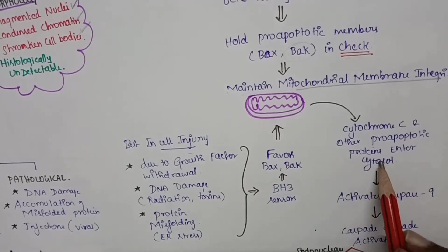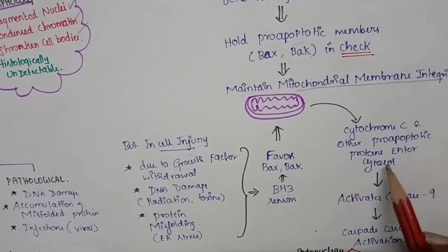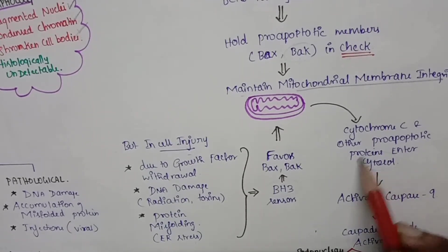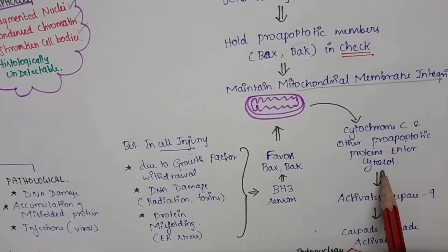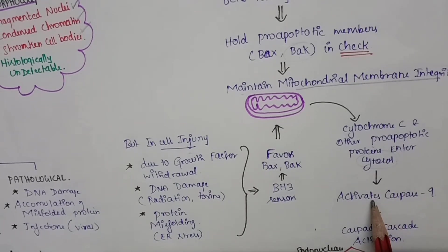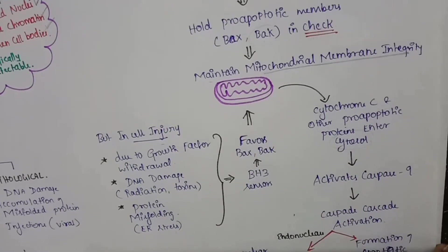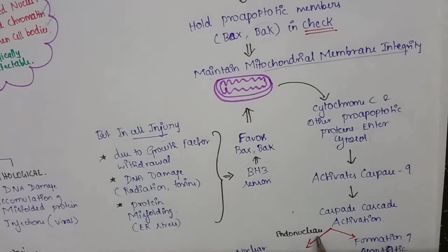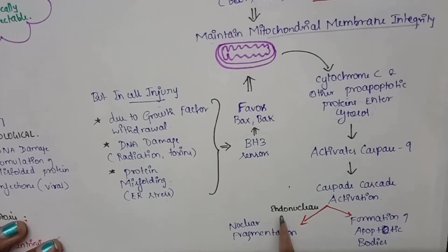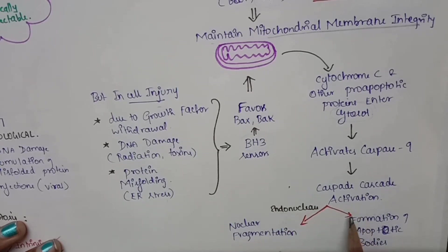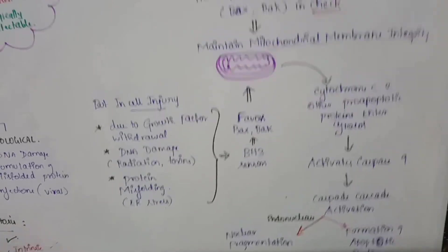There will be release of cytochrome c and other pro-apoptotic proteins into the cytosol. After entering the cytosol, it activates caspase 9, and there will be a caspase cascade activation. With the help of endonuclease enzymes, there will be nuclear fragmentation, and it also leads to the formation of apoptotic bodies.